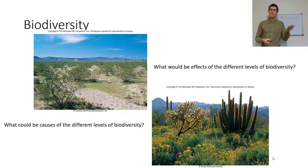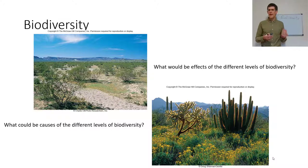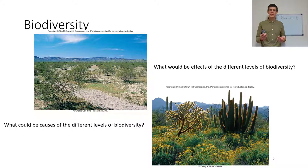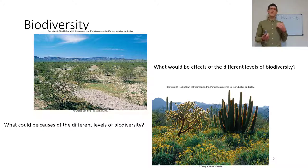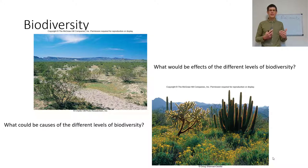Looking at biodiversity in two different deserts: the Sonoran Desert and the Mojave Desert show very different levels of biodiversity. One has organ pipe cactus and yellow flowers, while the other is a creosote plain. Think about some causes — rainfall, soil chemistry, relative drainage, relative temperature — all these different abiotic factors bring different levels of biodiversity.